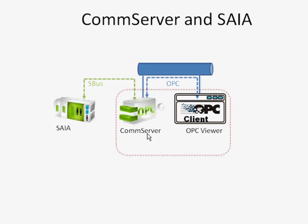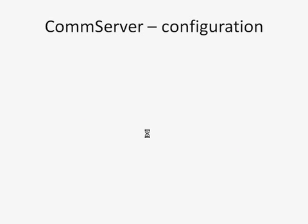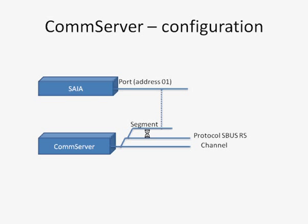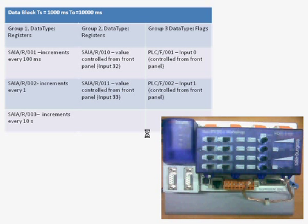Before we go to configuration we have to talk about two things. The first is the communication infrastructure and the second is what data we are going to read from the PLC. The communication infrastructure consists of: ComServer, one channel, an SBUS RS data provider, one segment, and a SIA station with port address 1. The next topic is what data we are going to read from the PLC — we are going to read three groups of data.